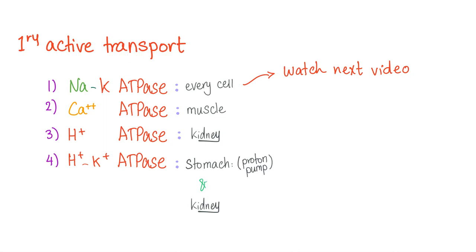These are the types of primary active transport: sodium-potassium in every single cell; calcium in the muscle; hydrogen-ATPase in the kidney; hydrogen-potassium ATPase in the kidney and in the stomach — we call it the proton pump, which secretes hydrochloric acid in your stomach. And of course, when you secrete something acidic within, you have to secrete something basic without — it's called the alkaline tide of the blood.